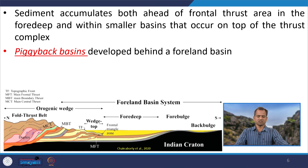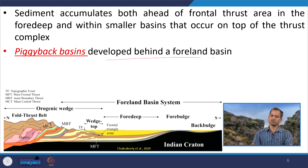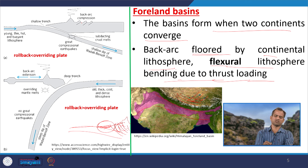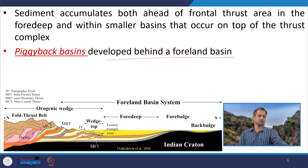Sediment accumulates both on the head and frontal side in the fore-dip area and within smaller basins that occur at the top of the thrust complex. We have piggyback basins developed behind the foreland basins. Within the thrust loading there are small piggyback basins — for example, loading the thrust creates some small-size basins, and these are the piggyback basins.